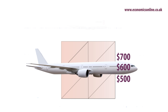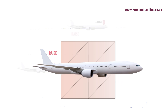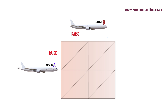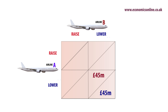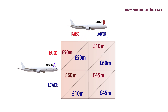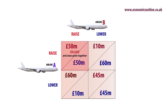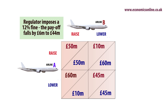For example, airlines must decide how to compete and what prices to charge. Assuming just two airlines — Airline A and Airline B — they can either raise or lower their price. The dominant strategy is to lower price, gaining £45 million. If one raises price and the other lowers it, the firm raising price loses market share and achieves only £10 million in profits. However, if they collude and promise not to cheat, they can both raise prices together and maximize joint profits at £100 million.